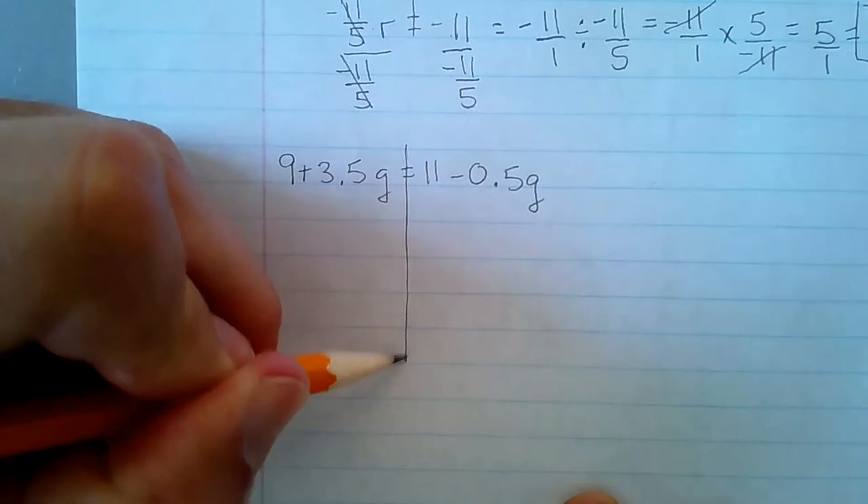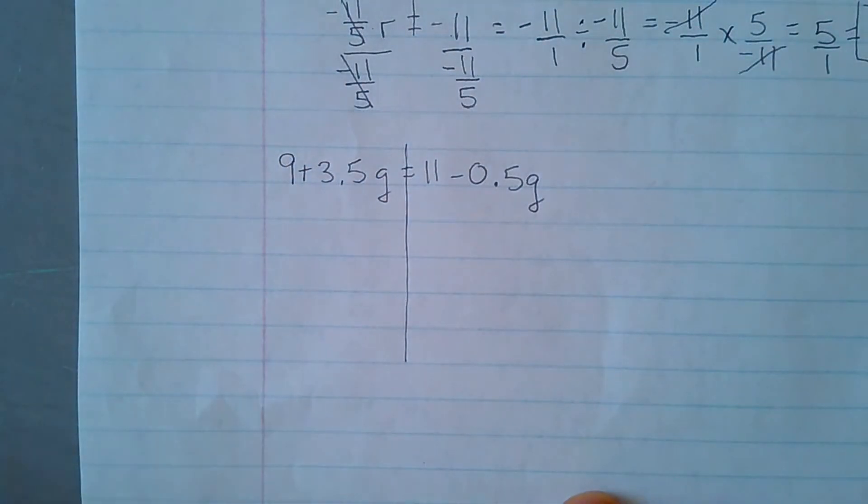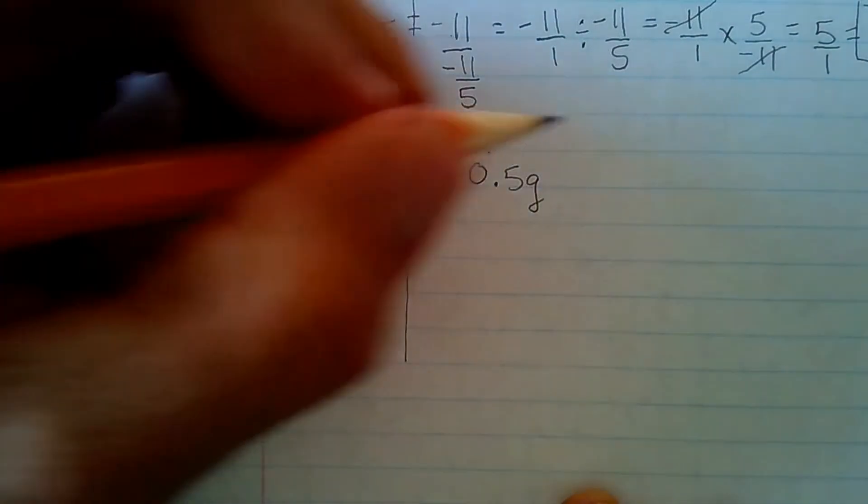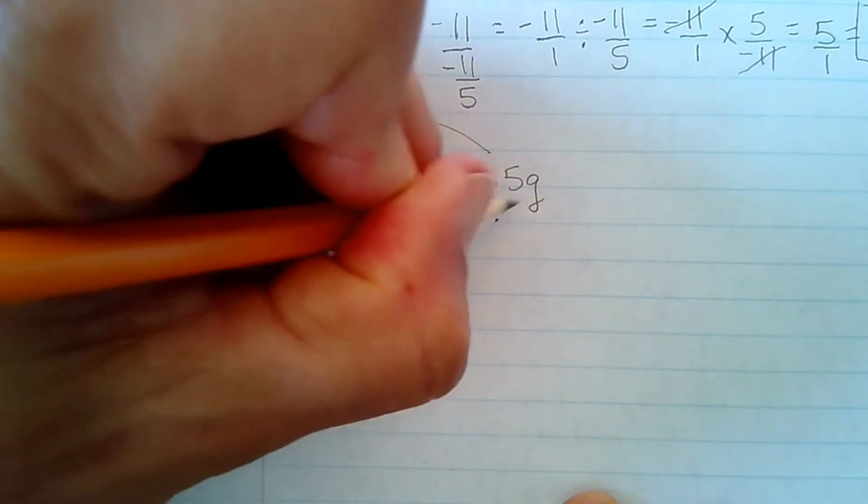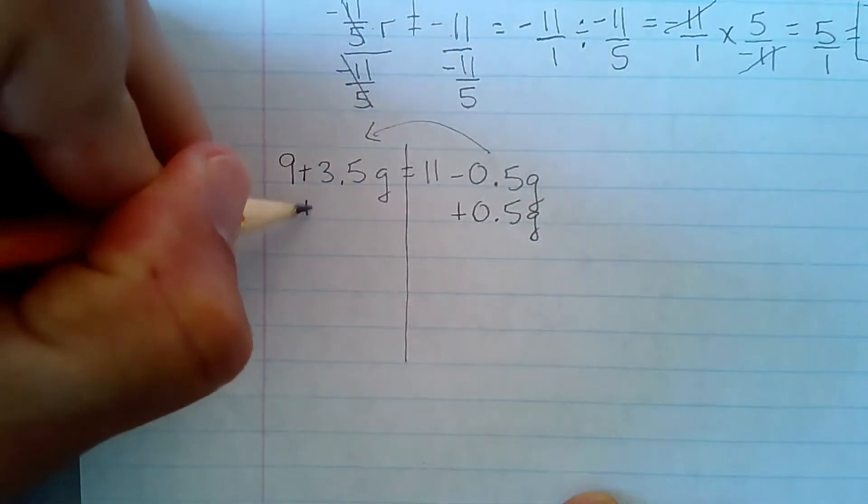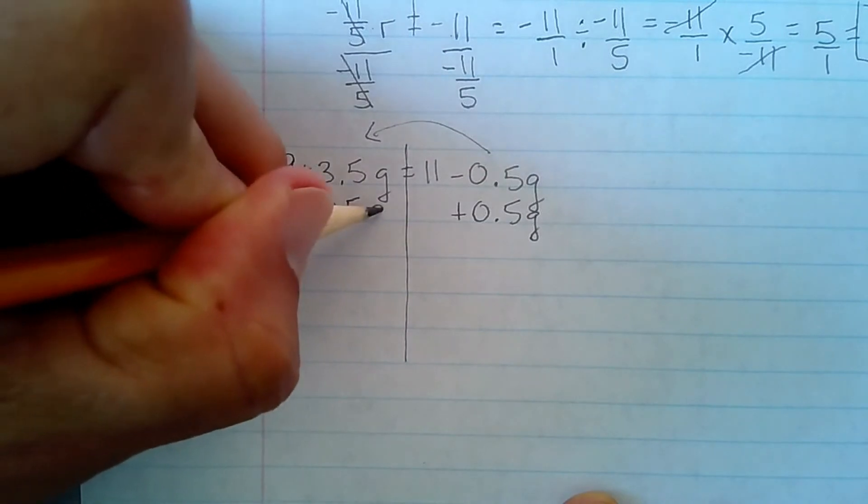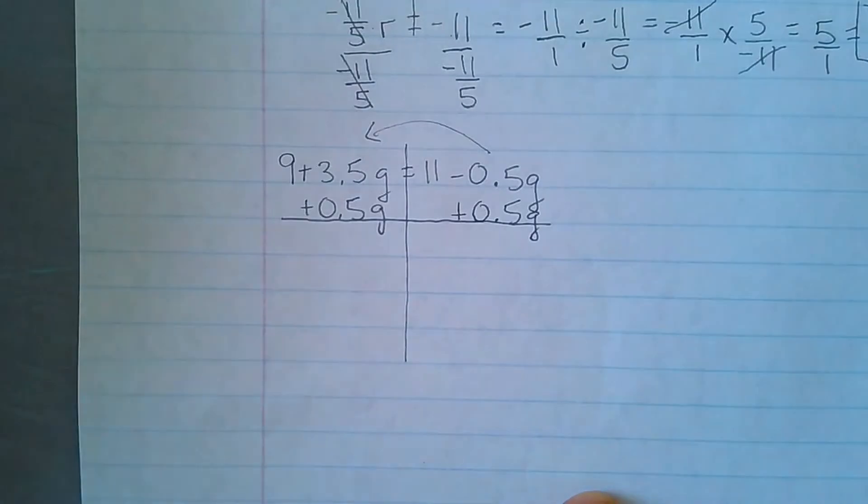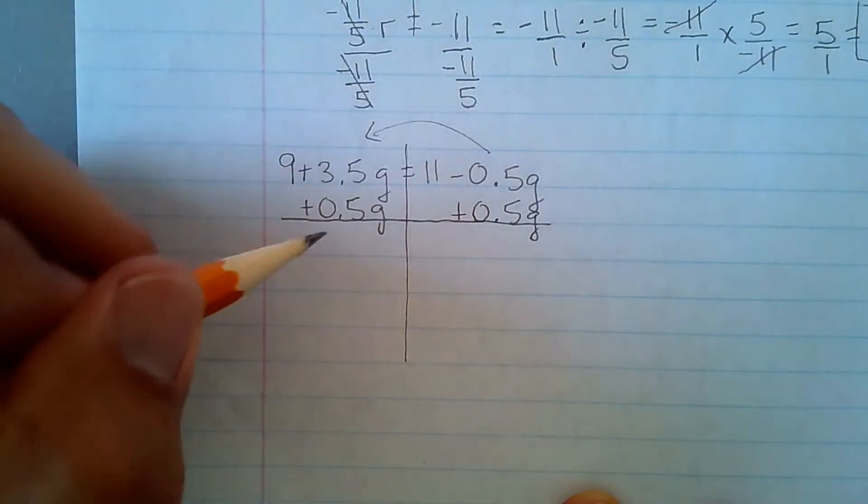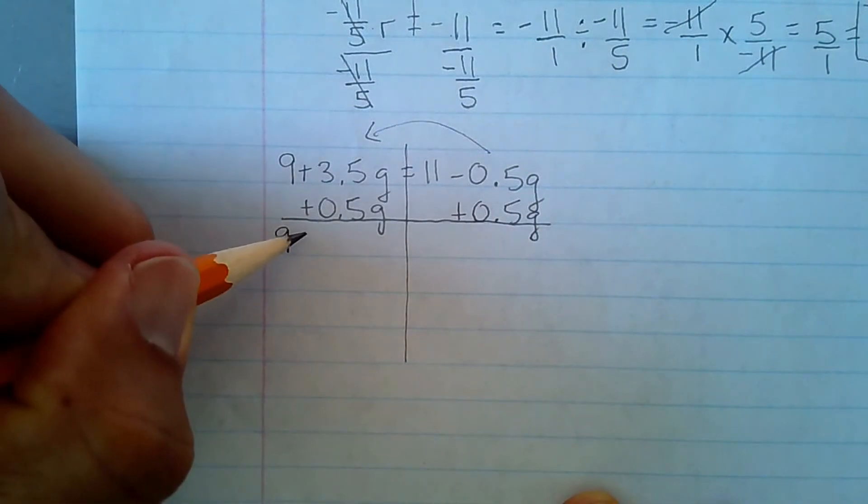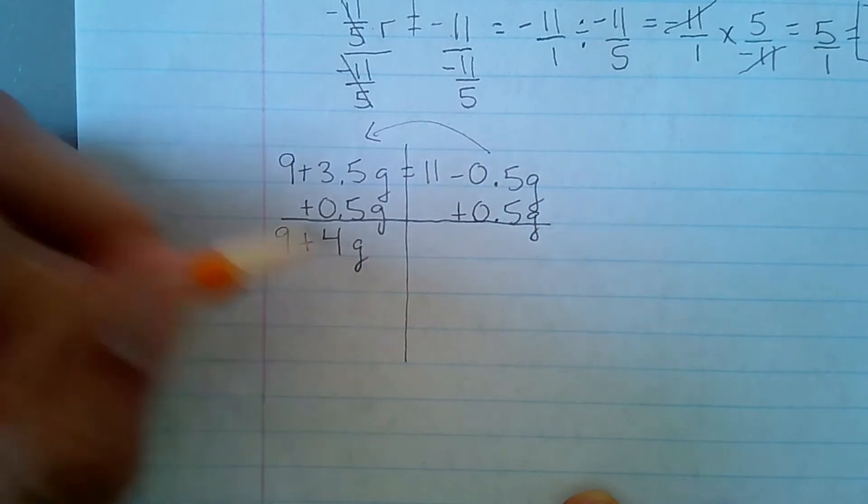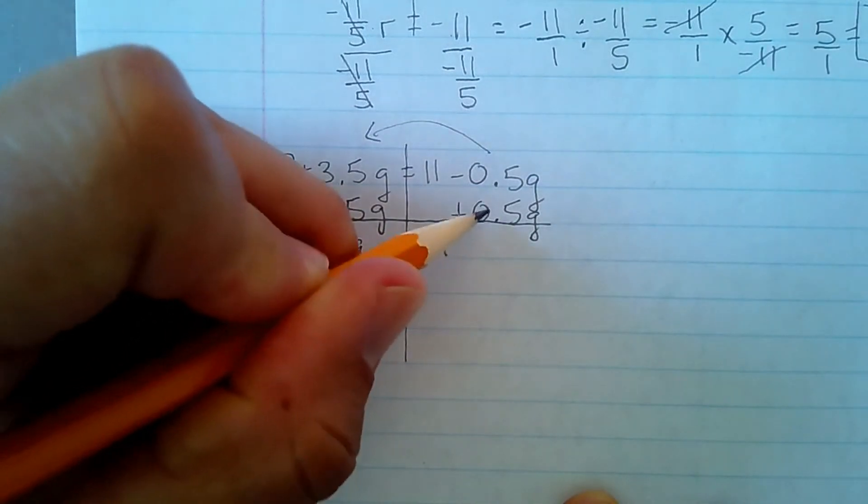I have 9 plus 3.5 G equals 11 minus 0.5 G. Now, once again, different sides. I'm going to bring this over here, but it has to be the opposite sign plus 0.5 G plus 0.5 G. And what have I got here? I've got 9 and then plus. What? That's going to be 4 G equals 11. And that's plus 0.